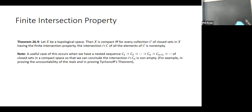The place where we use this in topology is when you have a nested sequence of closed sets in a compact space — you can conclude that their intersection is not empty. For example, it gives a really nice way to prove the uncountability of the reals without using any of the algebra of the reals, just by using topological properties.